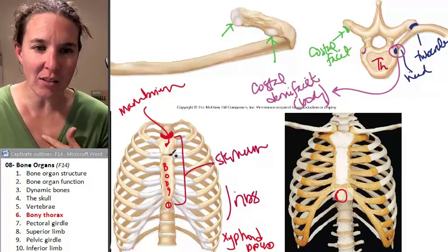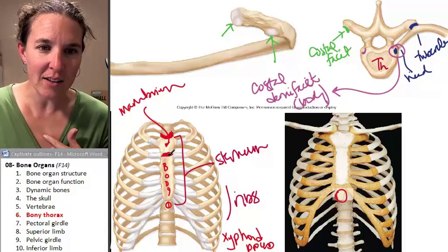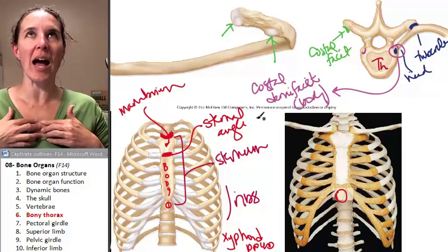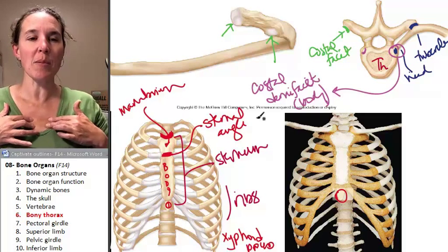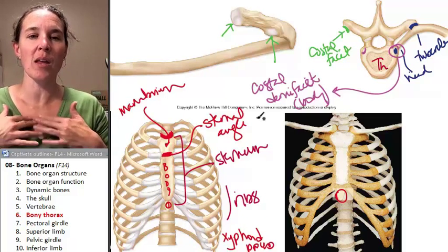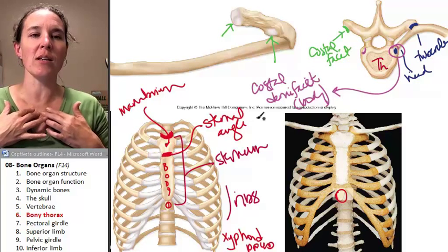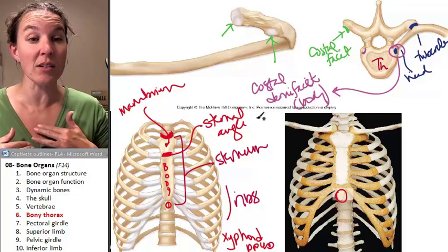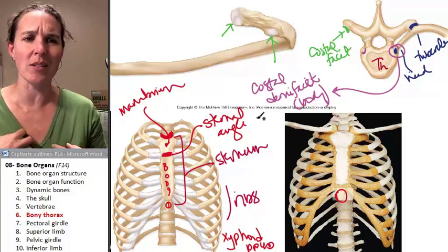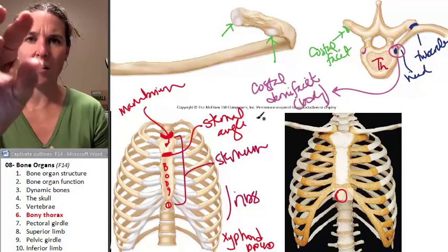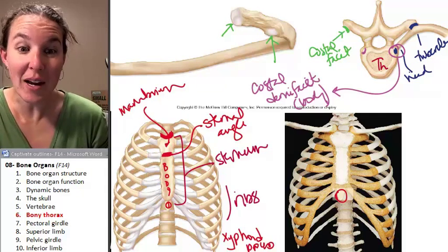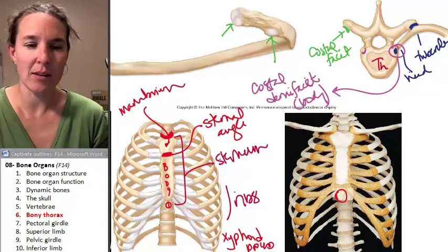The sternal angle is another landmark you can feel. Some people have a more pronounced sternal angle, but it's a point you can actually identify, and there's clinical significance to it — you identify it to know where to place your stethoscope to listen to the heart. Shall we do the pectoral girdle next? Let's do it.